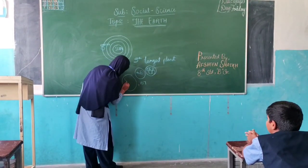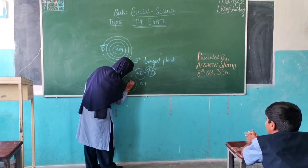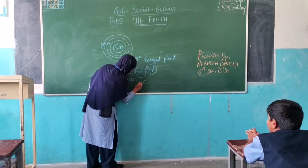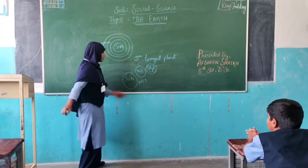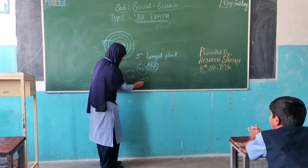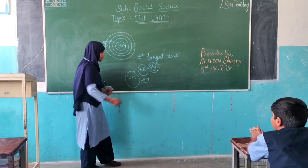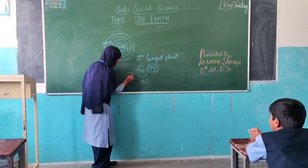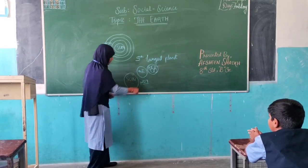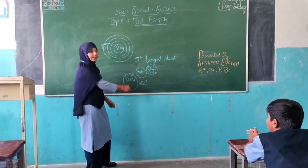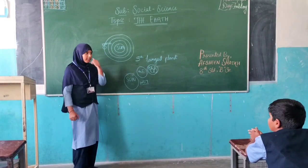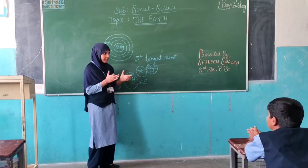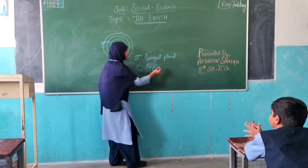And the Earth is 107 times smaller than the Sun. You can consider this — this is the Sun and this is the Earth. So the Earth is 107 times lesser than the Sun. If we fill 107 Earths, it will be equal to the Sun. Let's come to know the exact size of the Earth.